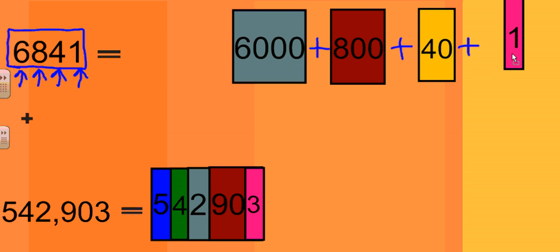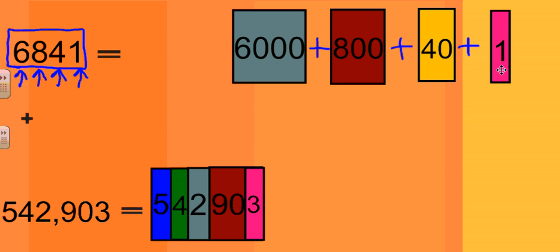We are left with the last digit in the ones place. 1 times 1 is equal to 1. In expanded form we have 6000 + 800 + 40 + 1, and that is equal to 6841. Next we're going to take a look at a slightly larger number — the only thing necessary to know is again the place value.